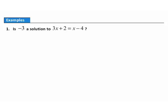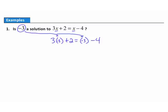When we make that substitution, just like we did when we evaluated expressions, we want to put an open set of parentheses wherever there was a variable. There was an x here, so I put an open set of parentheses, and here there was an x, so I put another. Once the parentheses are set up, I'll plug in negative 3. Now I want to work both sides independently. On the left, following the order of operations, I do the multiplication first — 3 times negative 3 gives me negative 9.